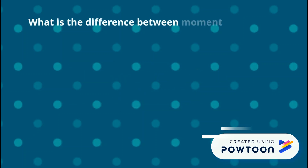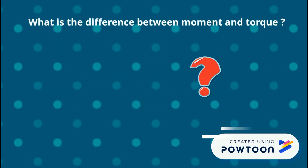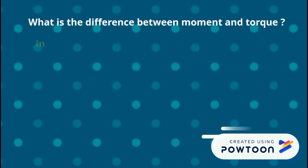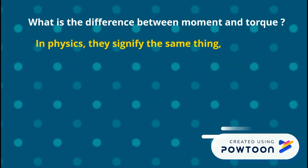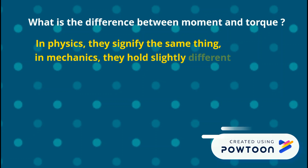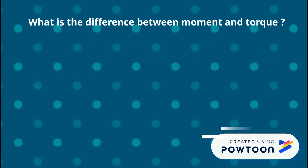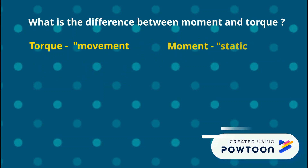What is the difference between moment and torque is the question that pops up in most of our minds. In physics, they signify the same thing, but in mechanics, they hold slightly different meanings. Both have the same unit, i.e. Newton meter. But torque is a moment of force, whereas moment is a static force.